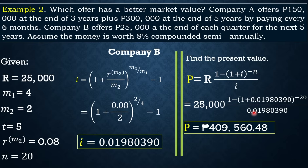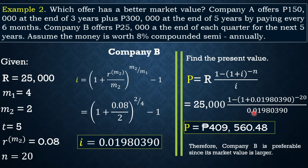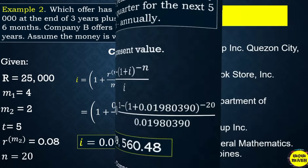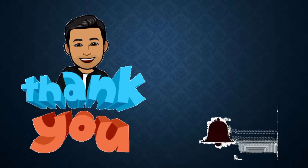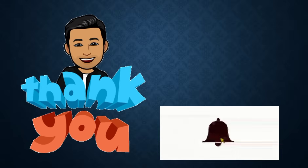Comparing the two companies: Company A's fair market value is 339,216.43 and Company B's is 409,560.48. Therefore, Company B is preferable since its market value is larger. Thank you for watching this video. I hope you learned something. Don't forget to like, subscribe, and hit the bell button for more video tutorials. This is your guide in learning math — your Walmart channel.